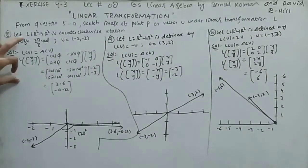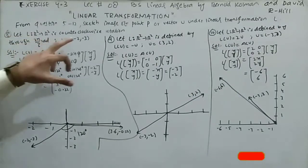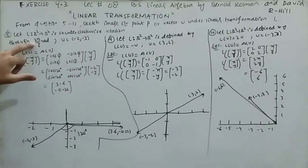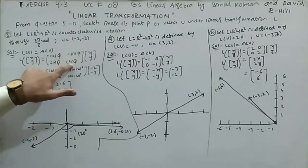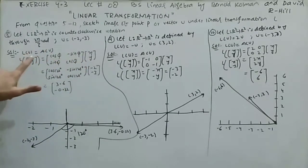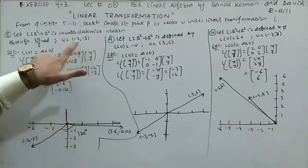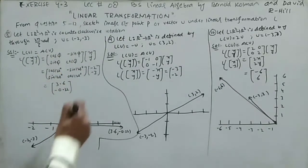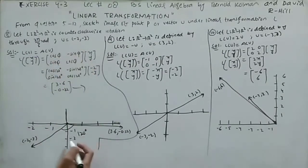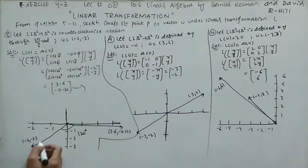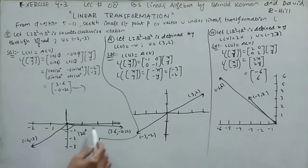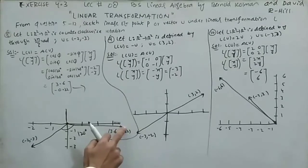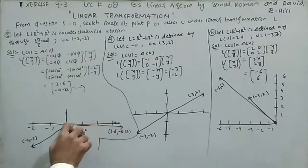Question 8: L is a counterclockwise rotation through 2π/3 radians (120 degrees), while u = (-2, -3). Using the rotation matrix A = [[cosθ, -sinθ],[sinθ, cosθ]] with θ = 120° and x = -2, y = -3, the image is (3.6, -0.22). The initial point (-2, -3) maps to (3.6, -0.22), representing a 120-degree counterclockwise rotation.